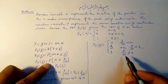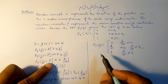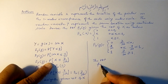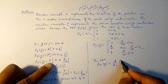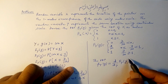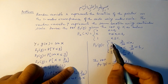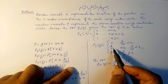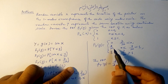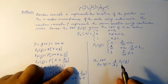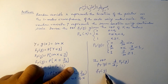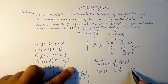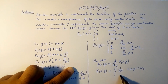Now we obtain the PDF f_Y(y) by differentiating this CDF. The constant regions differentiate to 0. Differentiating y/100 with respect to y gives 1/100. So the PDF is f_Y(y) = 1/100 for 0 ≤ y ≤ 100, and 0 otherwise.